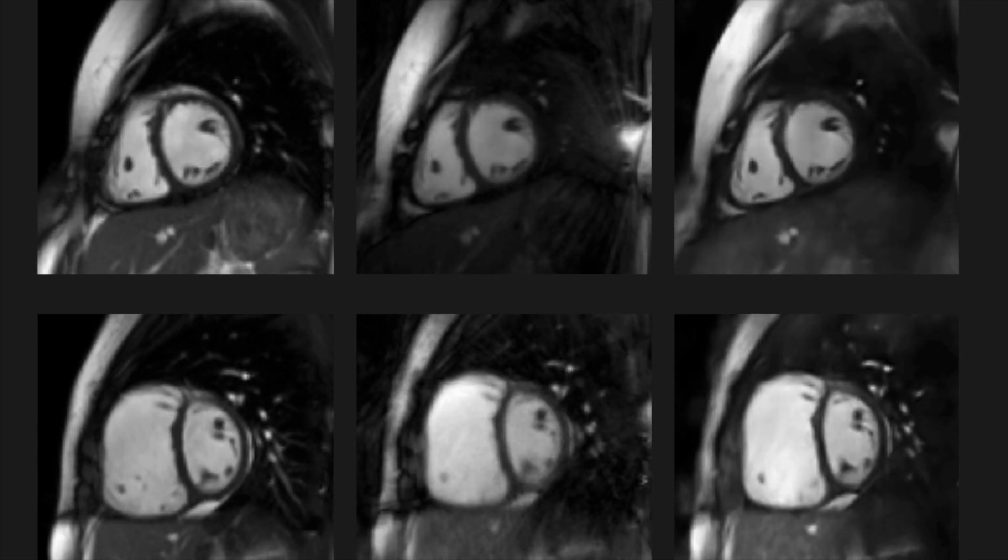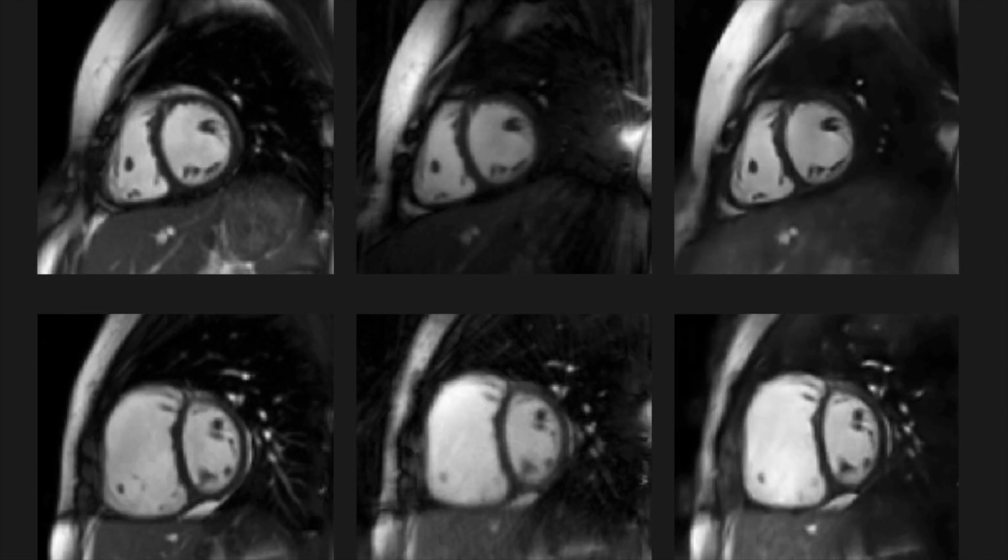Here, you see the reconstruction of the real-time data using the deep artifact suppression technology that's previously been described. The image quality is excellent, and it actually outperforms compressed sensing. More importantly, the reconstruction times are very short, 22 seconds for all slices. In addition, real-time data reconstructed using either compressed sensing or machine learning allows this type of data to be acquired very quickly, with an acquisition time for all slices of 18 seconds compared to 279 seconds.